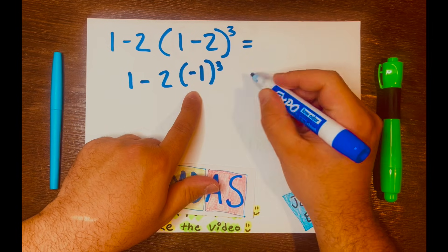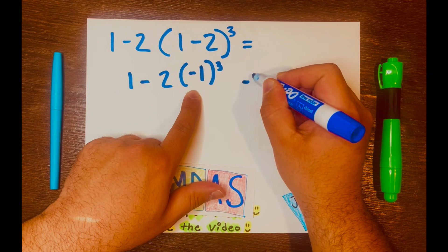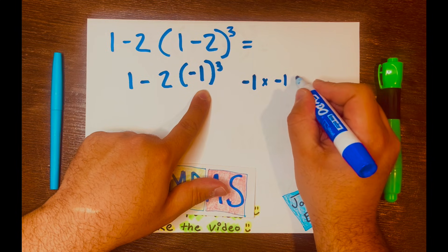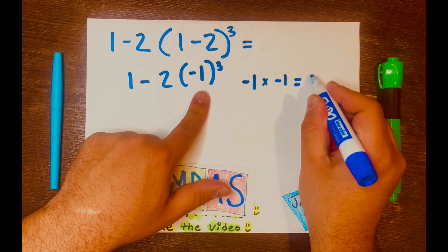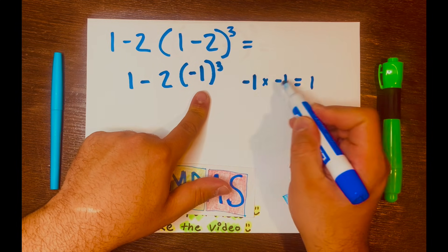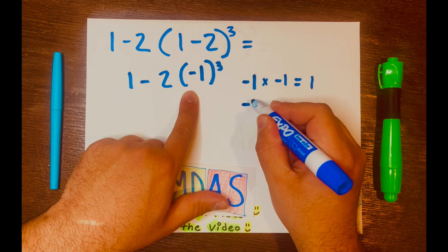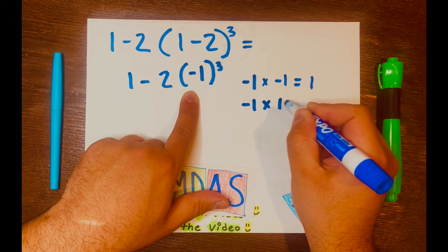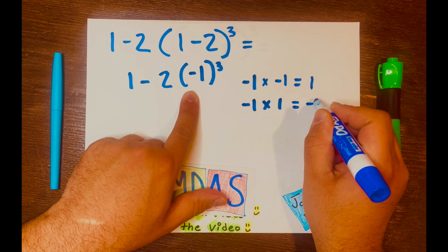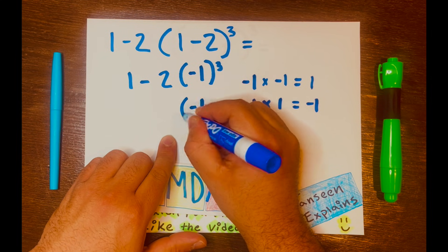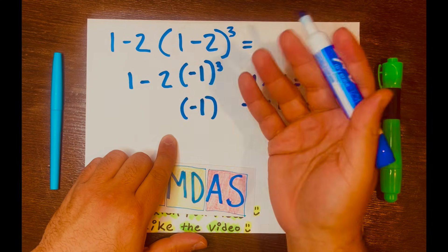So negative 1 times negative 1 equals 1. A negative times a negative equals a positive. And then negative 1 times 1 equals negative 1. So we'll have negative 1, keep the brackets or parentheses.